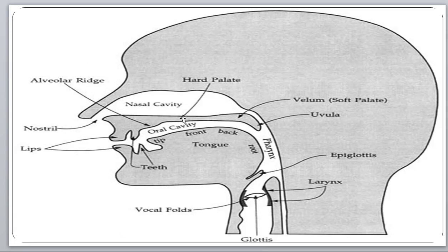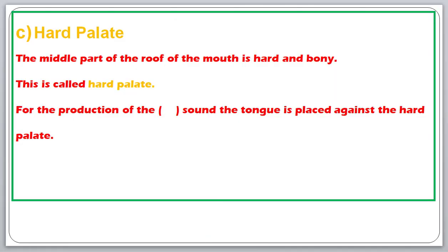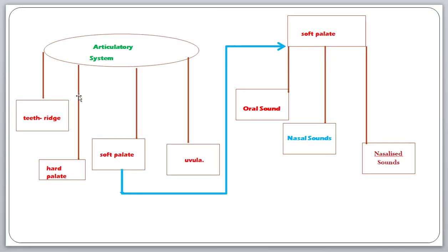Let's see the mind map. The articulatory system consists of four parts: teeth ridge, hard palate, soft palate, and uvula. The soft palate converts sound into oral sound, nasal sound, and nasalized sound. When the nose passage is blocked we get oral sound; when the mouth passage is blocked we get nasal sound; when both are open we get nasalized sounds. Thank you for watching — stay tuned for the next video.